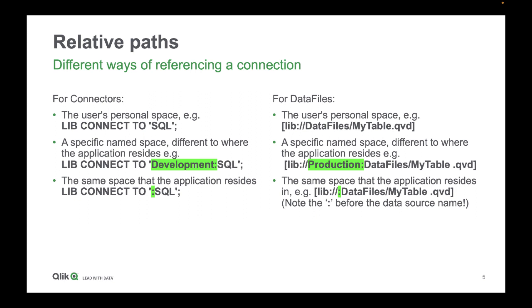So looking at our examples here: when we want to connect to our personal space, we would say lib connect to SQL — that is going to go into the personal space. If we want to use a different space, we'd say lib connect to development colon SQL. If we want to use the relative connection, however, we would say lib connect to just colon SQL. We use a colon to indicate it's coming from a space, but we don't list a space name and it will default to the current space. We have a similar syntax for data files where we've got lib colon slash slash prior to that. If you just use the data files it will go to the personal space; if we give it a space name it will go to that space; and if we give it a colon, it will be relative to our app in the current space.